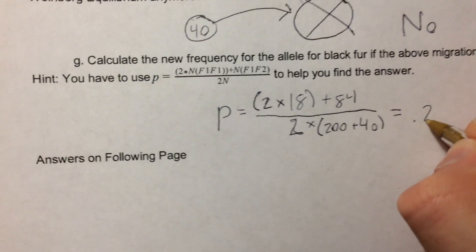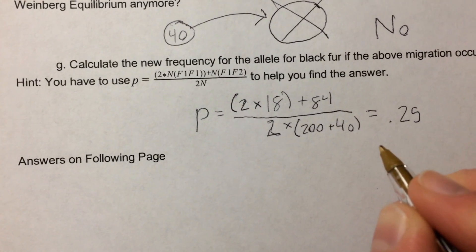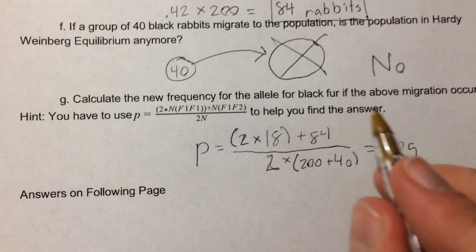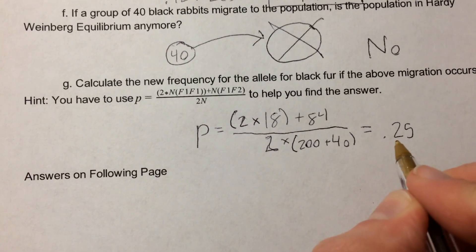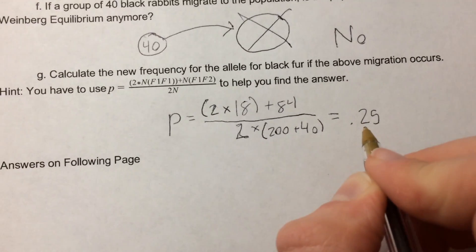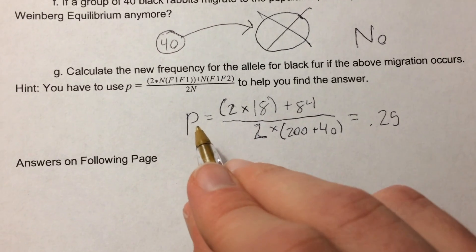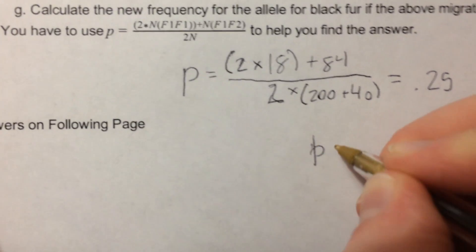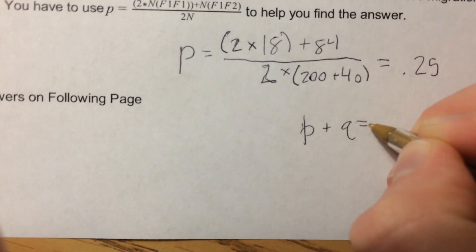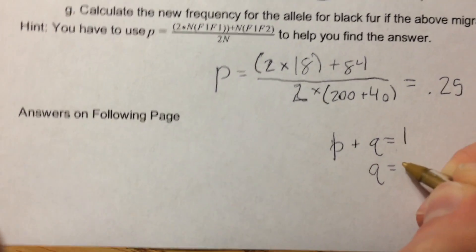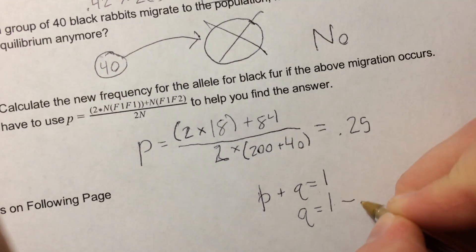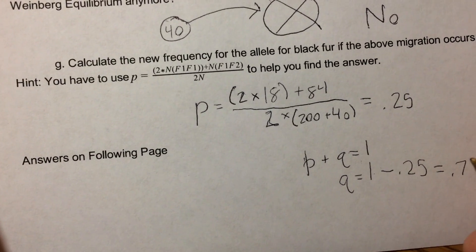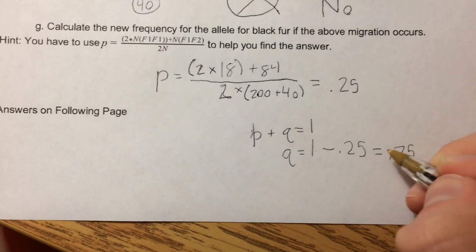When we multiply through and divide by 2 times the total population, we get P equaling 0.25. That is not our final answer, because that corresponds to the allele for white fur — the dominant allele, with P being the frequency of the dominant allele. We need to find Q, the frequency for the recessive allele for black fur. Using the formula P plus Q equals 1, we subtract P to the other side and substitute in our value: Q equals 0.75. And that is our answer.